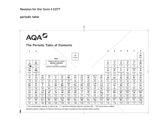Elements in group 1 will achieve a full outer shell by losing the one electron they have in that outer shell, so they form positive ions. When a lithium atom reacts with something, it loses its one outer electron and becomes a lithium ion with a charge of +1. Because the nucleus is positive and the electrons are equally negative, the atom has no overall charge. When it loses an electron, there's an overall positive charge left behind, so each group 1 element forms a +1 ion.